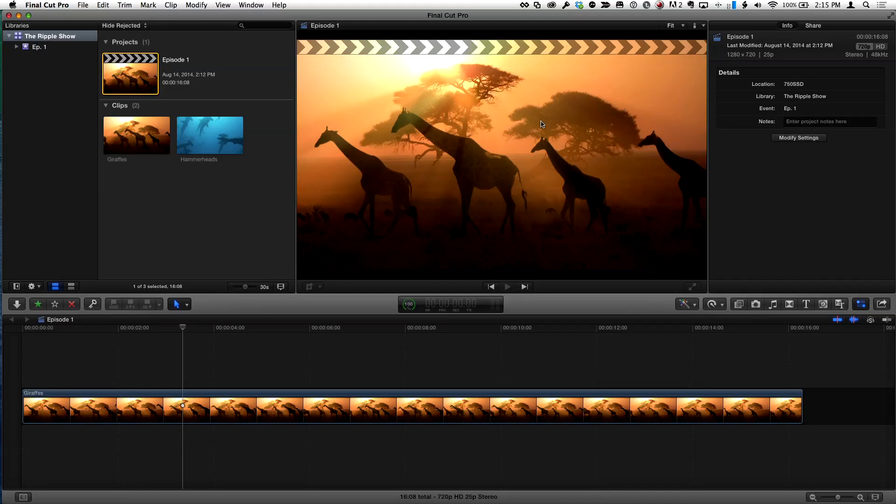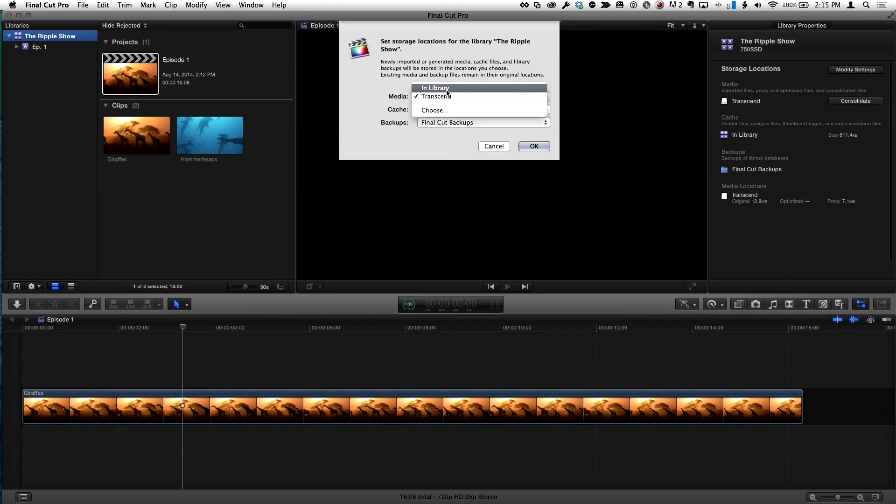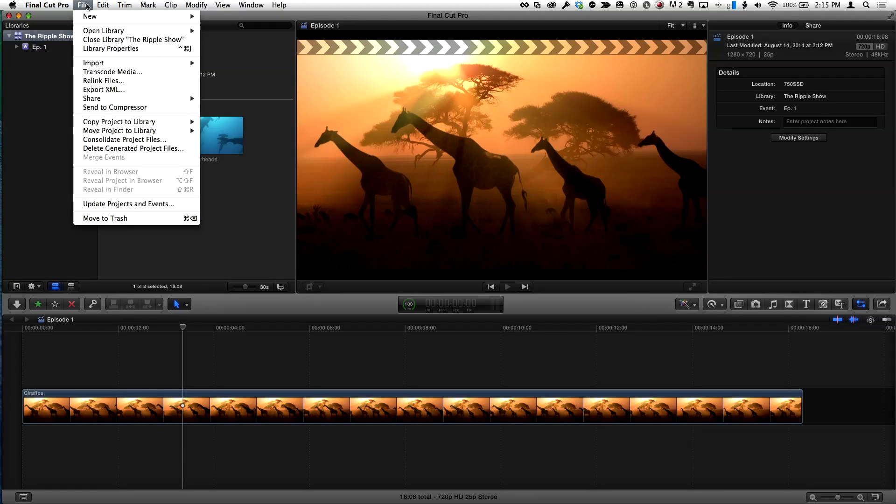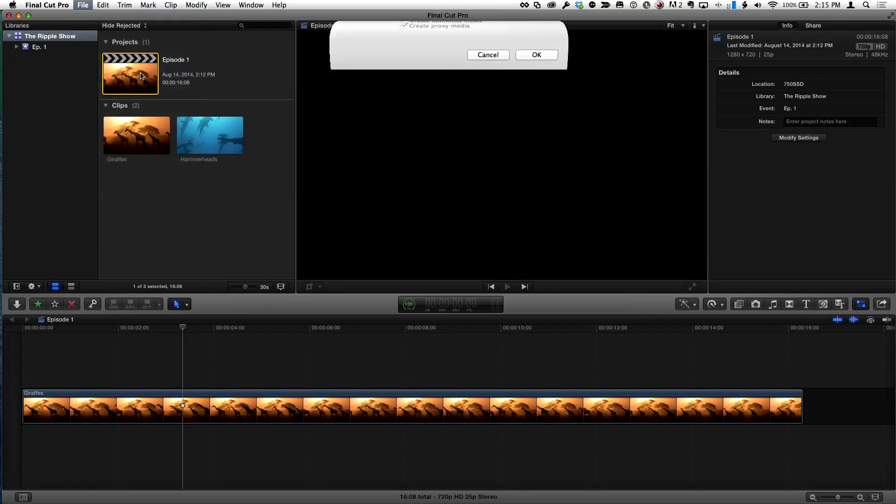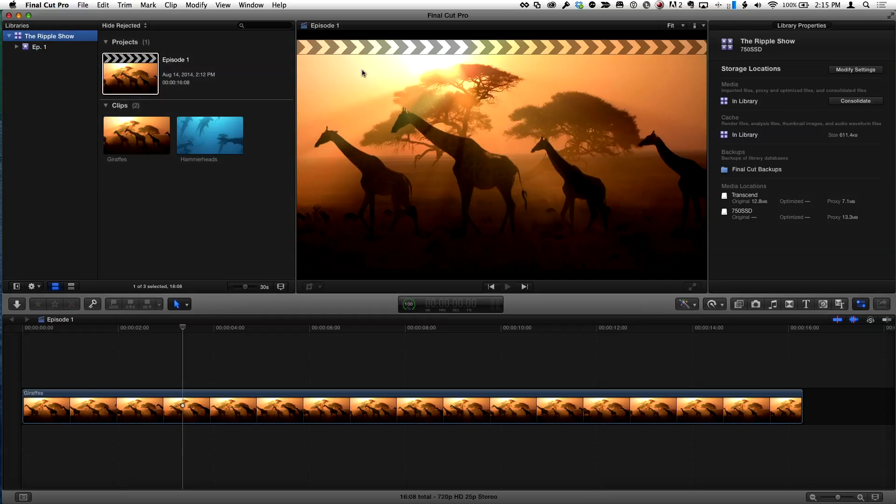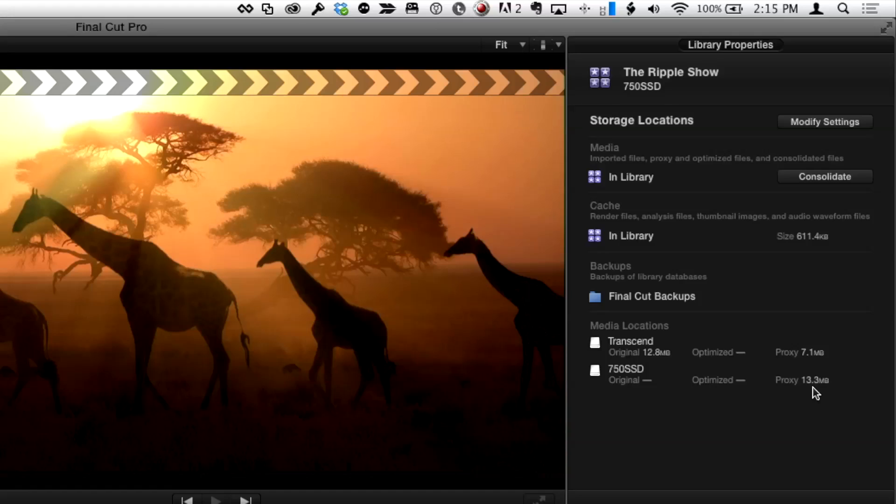With the library selected, I can change my storage location to the library on my local drive, and then with that project selected again I can choose to transcode media, which will transcode just that single clip in this case. What I've done effectively is ended up with proxy media in two locations: all the proxy media that I don't need to have with me is still on that RAID, but the proxy media I need with me is here where I need it.